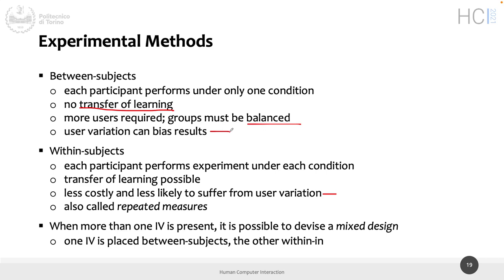These are the two main kinds of experimental methods. When you choose within-subject, you need fewer people but there is transfer of learning — so you need a way to minimize it. Otherwise the last condition may be faster than the first because participants have learned the task by the third time. With between-subject you need more people and balanced groups. This is the main trade-off.